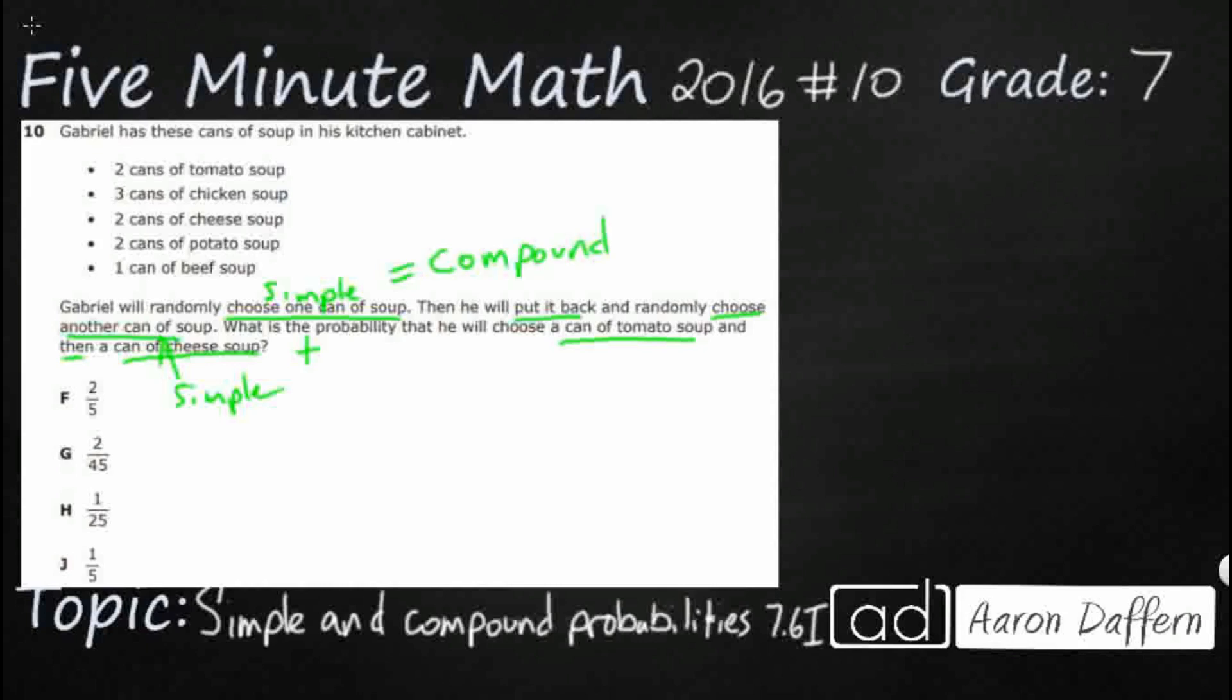So a compound event is when two or more simple events are kind of mashed up together. And so we're dealing with a compound probability. So we need to find simple probabilities first, and then we'll figure out how we can turn those simple probabilities into a compound probability.